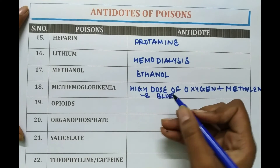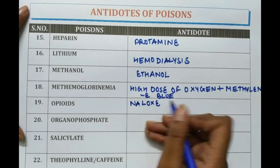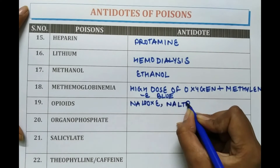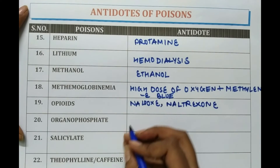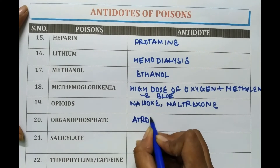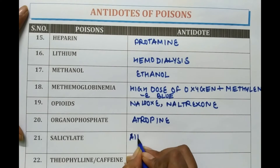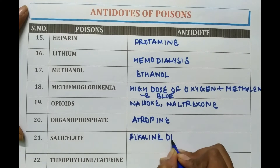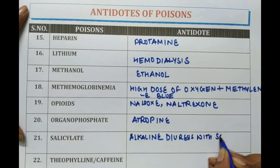In case of opiates, naloxone or naltrexone is suggested. In organophosphate poisoning, atropine is suggested. In salicylate poisoning, alkaline diuresis with sodium bicarbonate is performed.